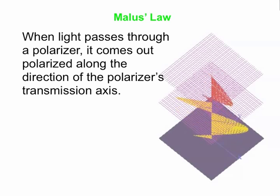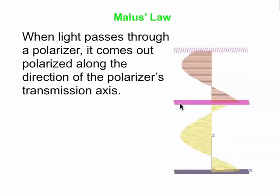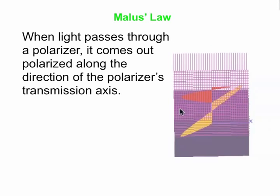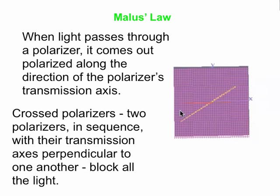Now we'll add a second polarizer whose transmission axis is at 90 degrees to the first — these are called crossed polarizers. In that case, no light at all gets through the second one. The first polarizer polarizes the light along its own transmission axis; the second polarizer is at 90 degrees to that, so applying Malus's Law gives cosine of 90 squared, which is zero. Using two polarizers back-to-back with transmission axes at right angles blocks 100% of the light.